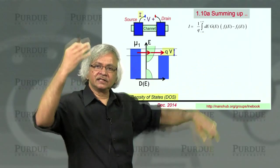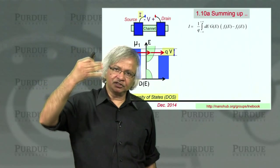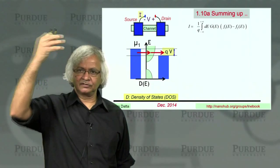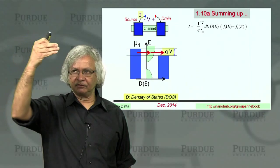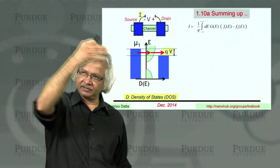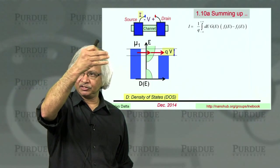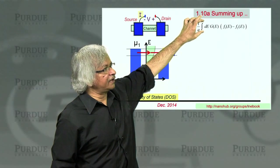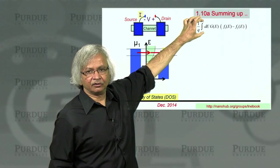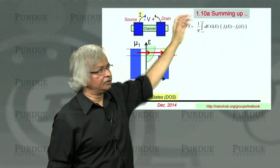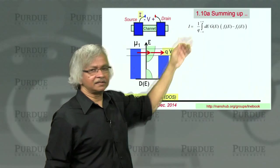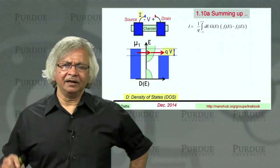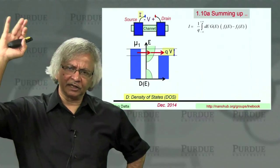Since every energy channel is independent—electrons come in and go out with exactly the same energy—you can integrate over all energies to get the total current. That's the basic current formula obtained in lecture 3.